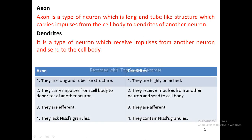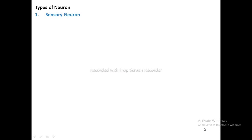Differences between axon and dendrites: Axon — they are long and tube-like structures, whereas dendrites are highly branched and short. Axon carries impulses from the cell body to dendrites of another neuron, whereas dendrites receive impulses from another neuron and send them to the cell body. Axon is efferent whereas dendrites are afferent. Axon lacks Nissl's granules whereas dendrites contain Nissl's granules.